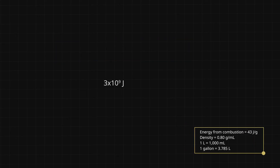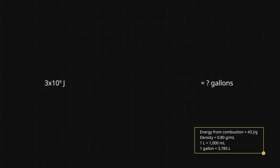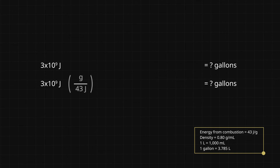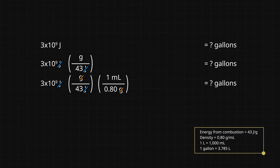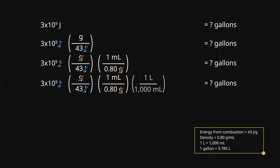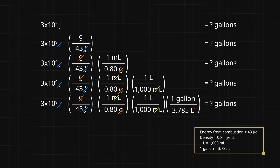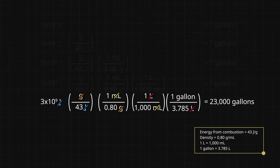We can write this as a proportional relationship. We also have some unit conversions we'll need to get all the units to cancel out correctly. Our given is that we need 3 billion joules of energy, and our target is the volume of kerosene in gallons. So we can use the energy from combustion to get from joules to grams of kerosene. The density gets us from grams to milliliters. We convert milliliters to liters, then liters to gallons. We need 23,000 gallons.